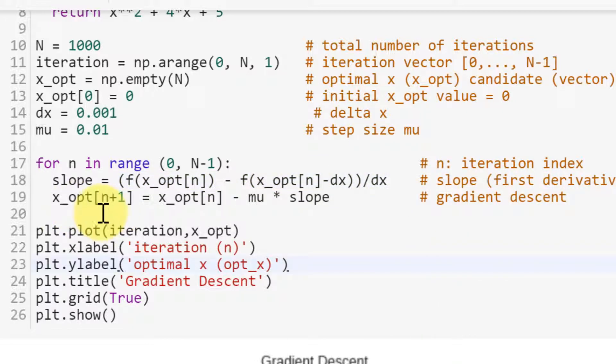Here we have gradient descent algorithm. So the next x_opt is determined by previous x_opt. And we have a slope here. We have a step size here.